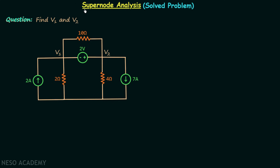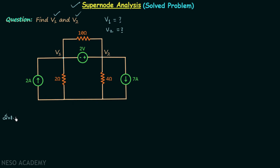In the last lecture we understood the basics of super node analysis and now we are going to solve one problem using the super node analysis method. Via this problem we will try to understand super node analysis in more detail. According to the problem we are required to find voltage V1 and voltage V2. The given network has 3 sources and 3 resistors, where V1 is the voltage at one node and V2 is the voltage at another.